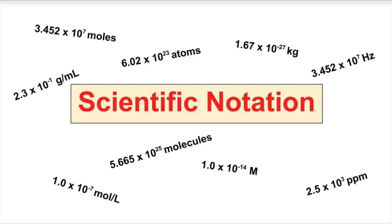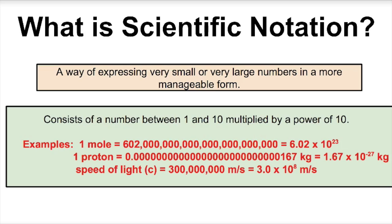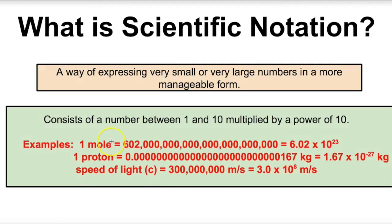Hey you guys, this is Mr. Millings and today we're going to learn a little bit about scientific notation. So what is scientific notation and how does it work? Scientific notation is a way of expressing very small or very large numbers in a more manageable form.